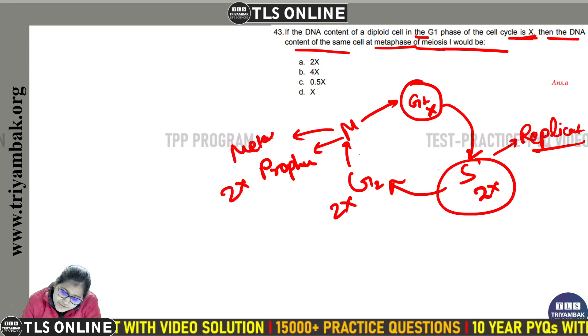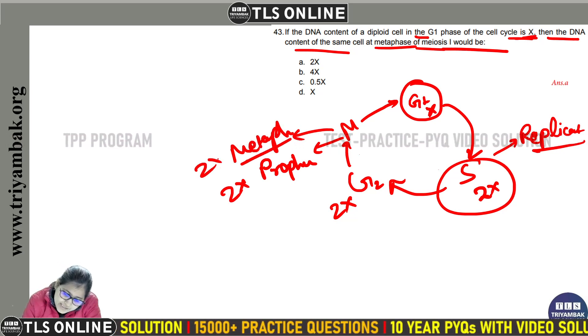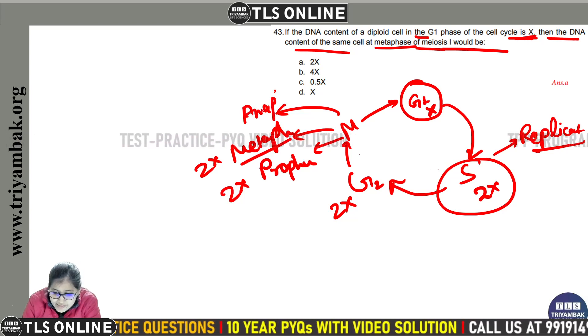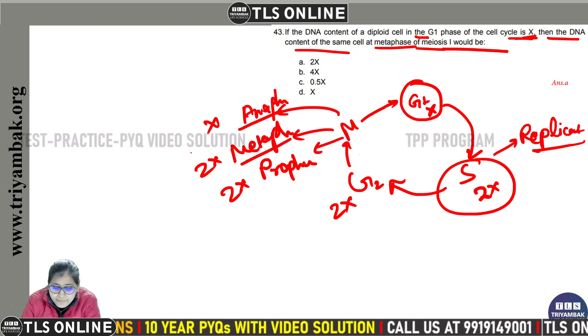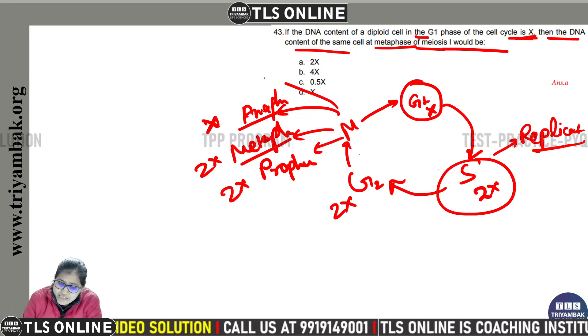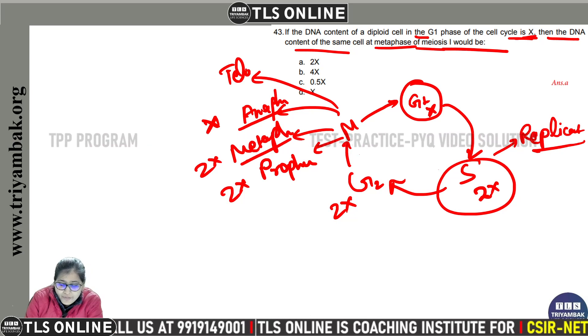Metaphase mein, metaphase one mein bhi 2x rahega. But jab anaphase aati hai, meiosis ki anaphase mein chromosomal separation hoota hai, to x x separate ho jayenge. Anaphase ke baad aati hai telophase jab reformation of nuclear envelope hoota hai.